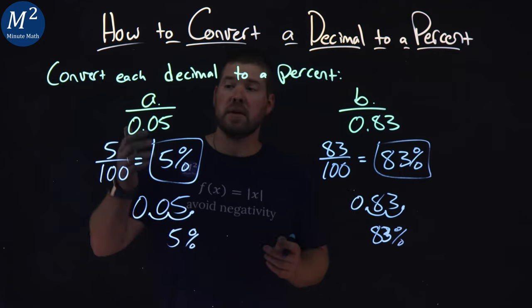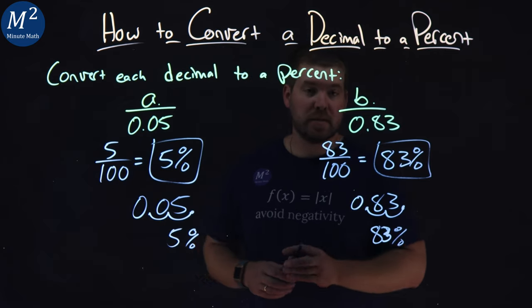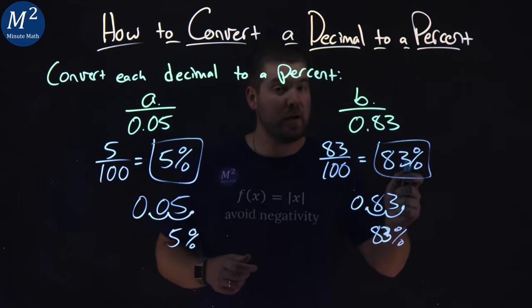Either way, we have our answers. 0.05 is 5% and 0.83 is 83%.